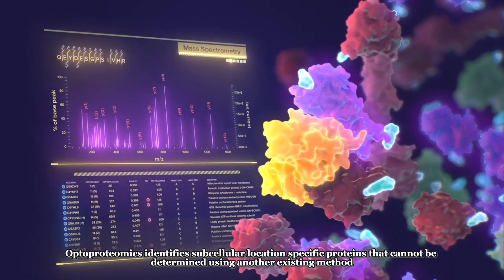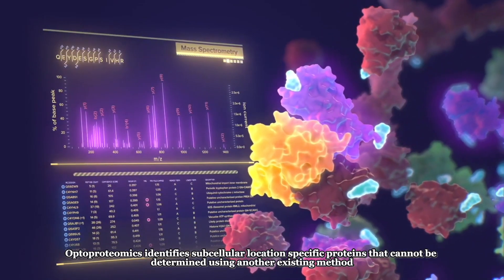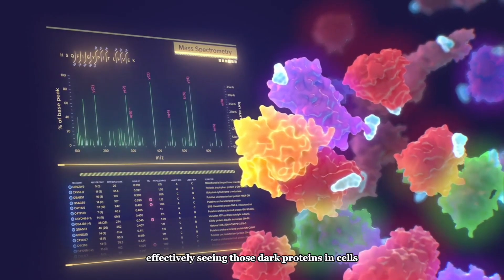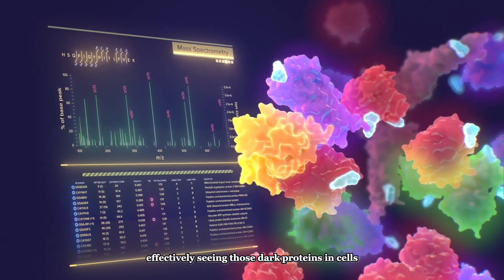Optoproteomics identifies subcellular location-specific proteins that cannot be determined using another existing method, effectively seeing those dark proteins in cells.